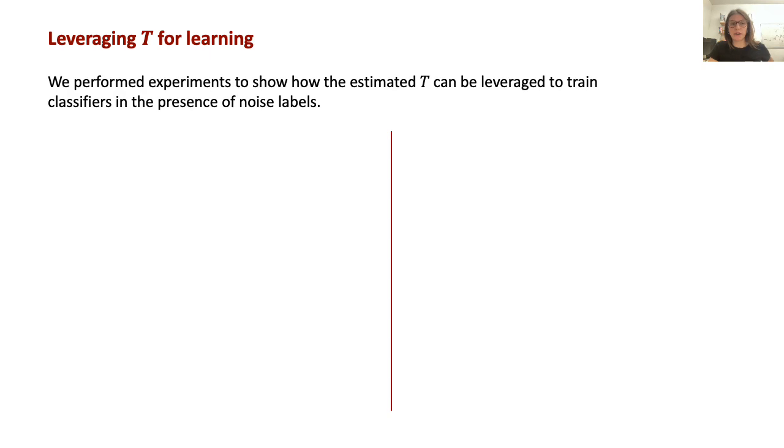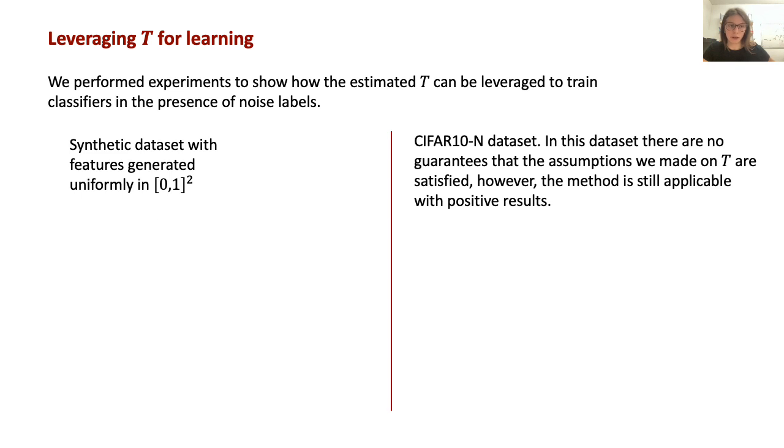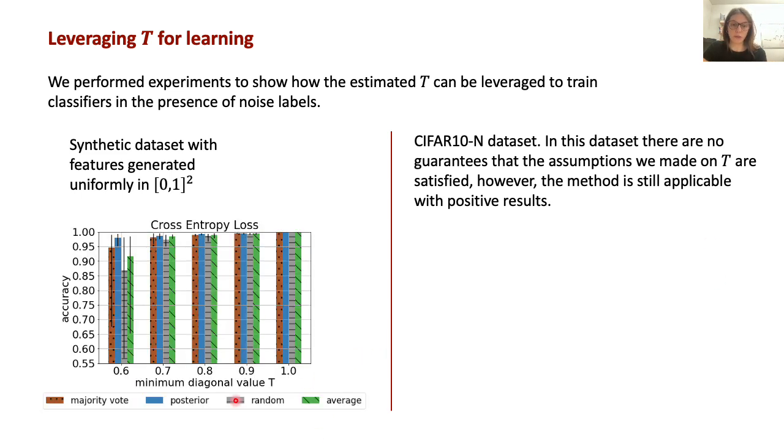We performed an experiment to show what are the results of using the estimated T to obtain soft labels, both on a synthetic dataset and on a real dataset, CIFAR-10N. In particular, we compare the usage of the posterior with other three aggregation methods: majority vote, random, and average. In random aggregation, the final label is randomly picked from the labels of the annotators. In majority vote, the mode is chosen, and so these two methods provide a hard label, while average is the relative frequency among annotators, and is a soft label as the posterior. Results in this figure are obtained for a synthetic dataset with four classes with distribution shown in this plot, and three annotators.